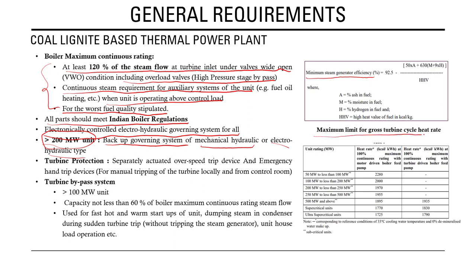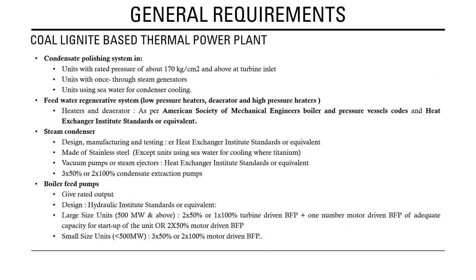The regulation also specifies requirements for various auxiliary systems including condensate polishing system, feedwater regenerative system, steam condenser system, and boiler feed pump system, covering design, manufacturing, and testing requirements. The number of condensate pumps and the capacity of boiler feed pumps for different unit sizes are also specified.